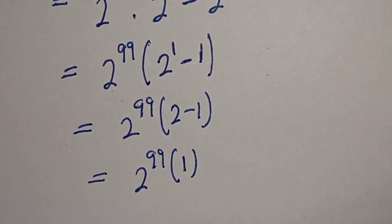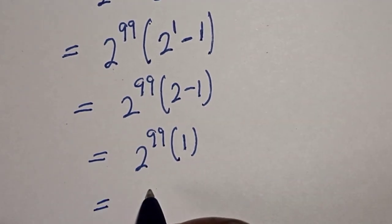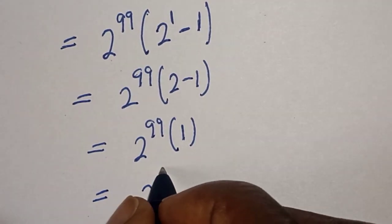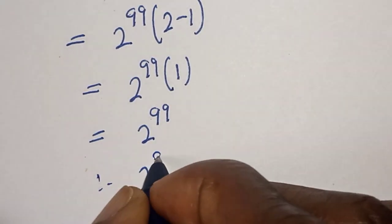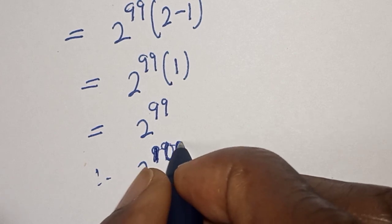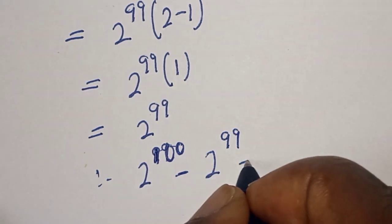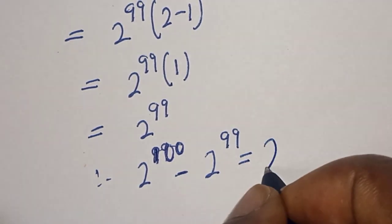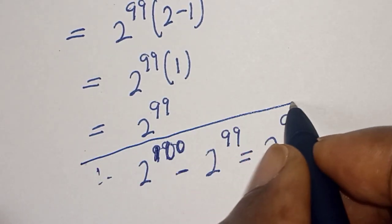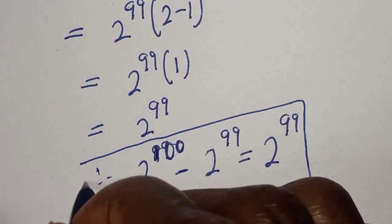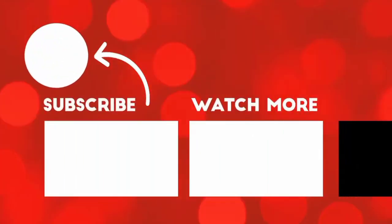That bracket gives us 1, and if you multiply 2 to the power of 99 by 1, you have 2 to the power of 99. Therefore, 2 to the power of 100 minus 2 to the power of 99 is equal to 2 to the power of 99. That is our final answer. Before you leave, like, share, comment and subscribe. Thank you, bye bye.